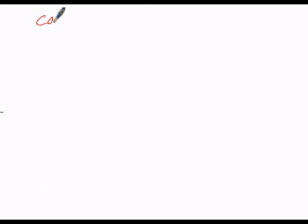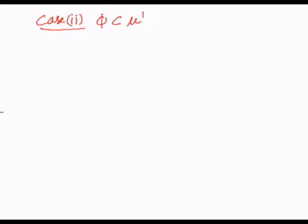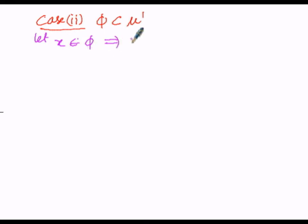In Case 2, we have to prove φ is a subset of μ dash. Since we are proving by element-wise method, we have to consider one element x which belongs to the empty set φ. In order to represent φ, the empty set, we can write it as x belongs to μ and x does not belong to μ.